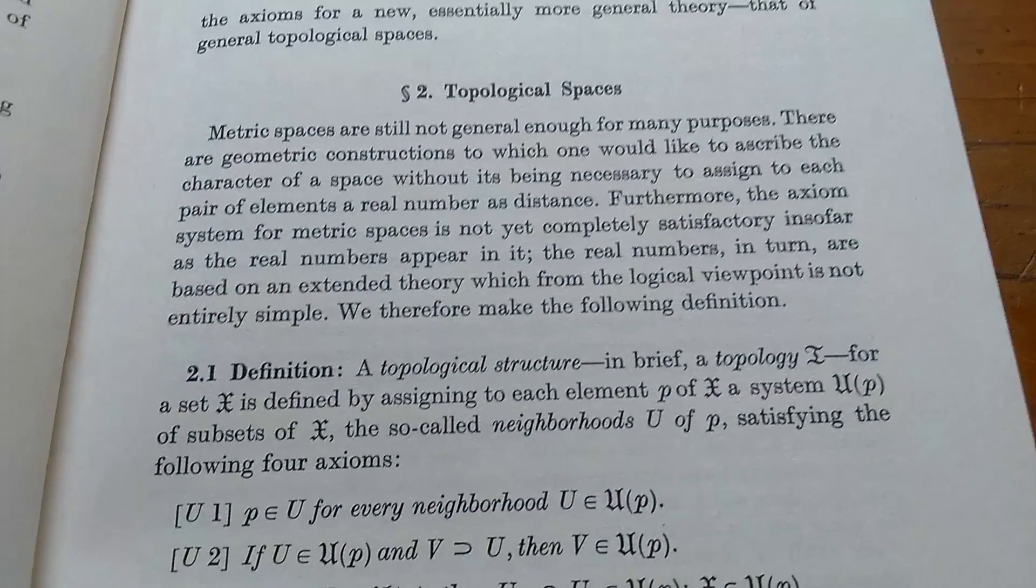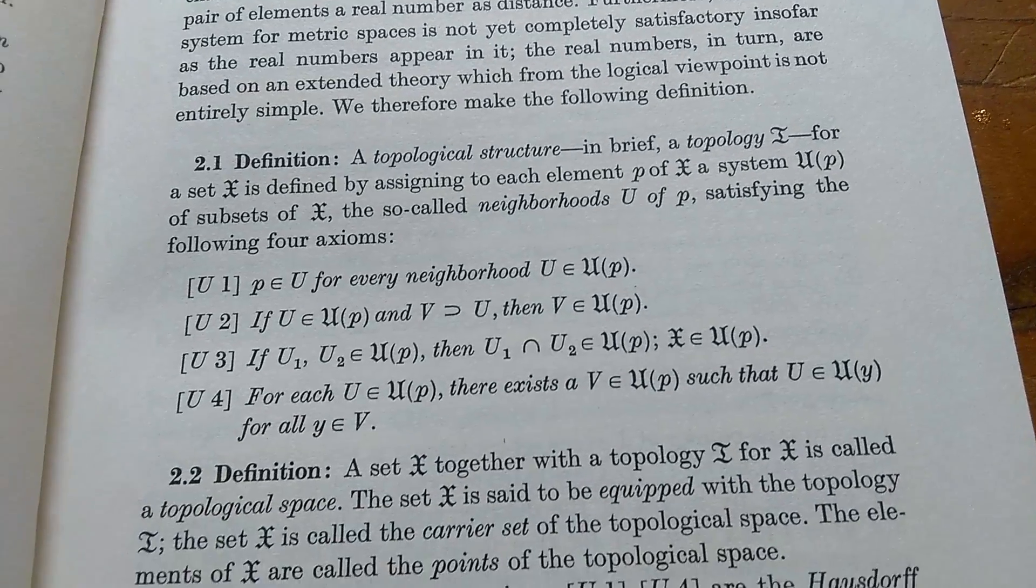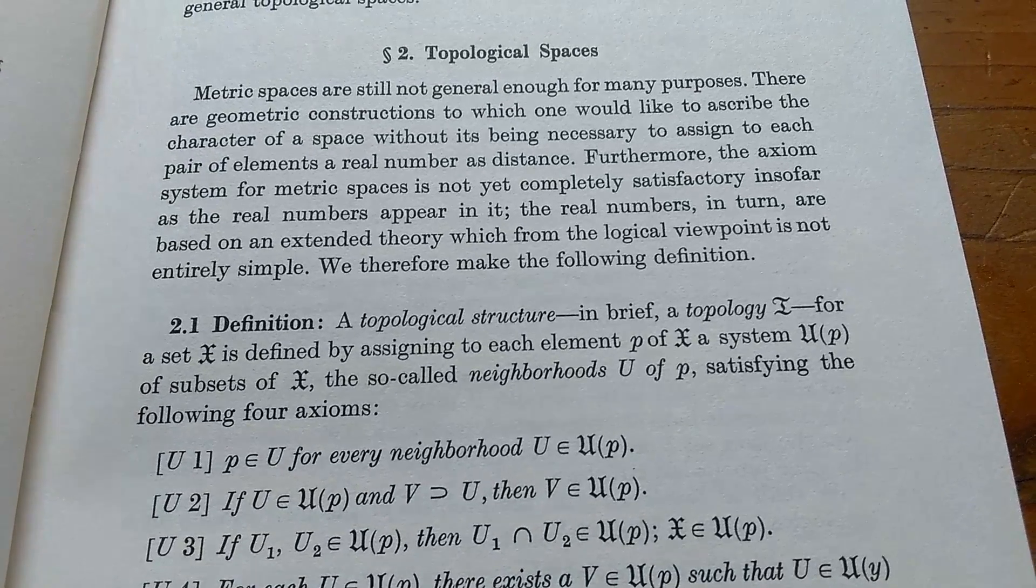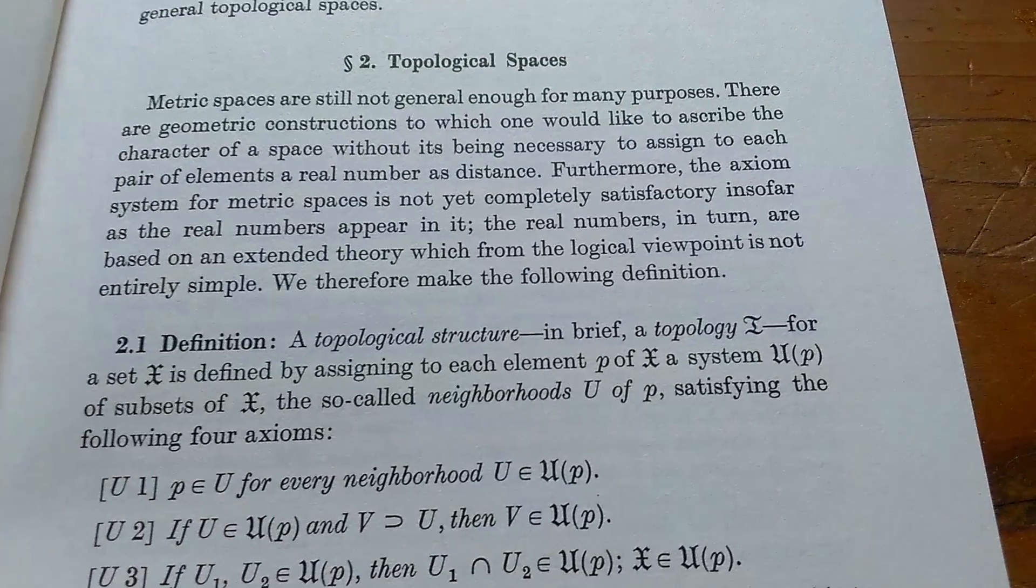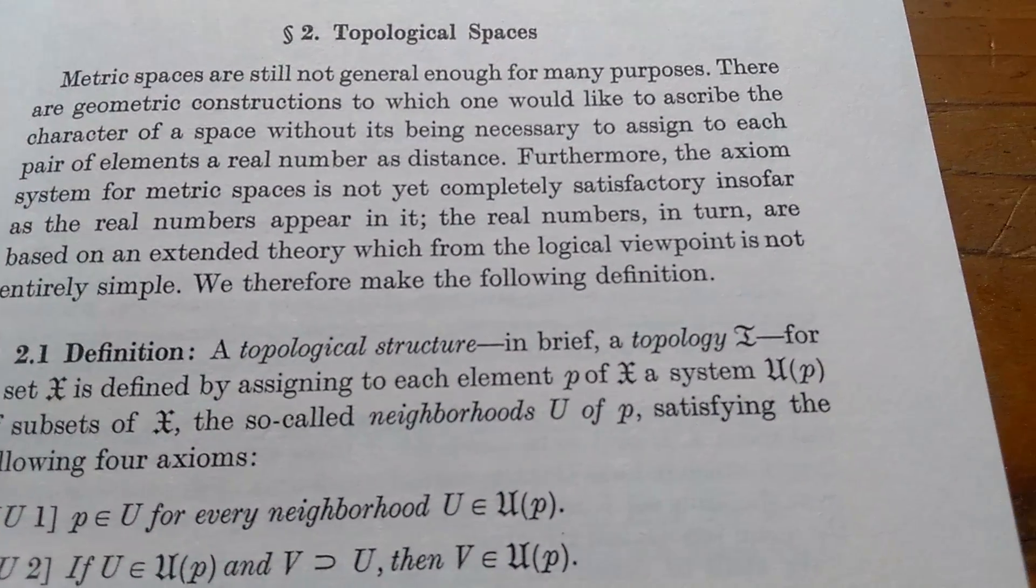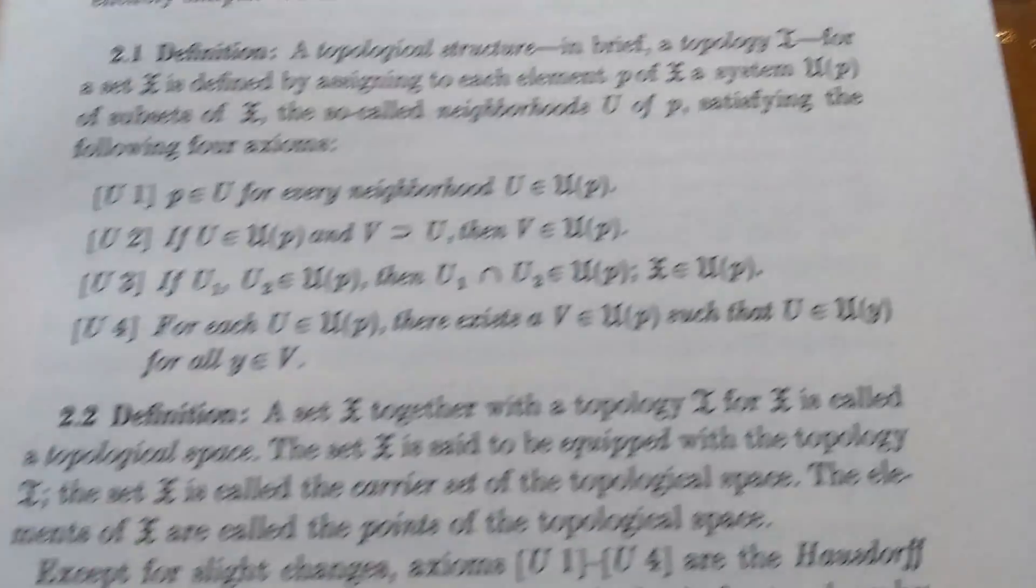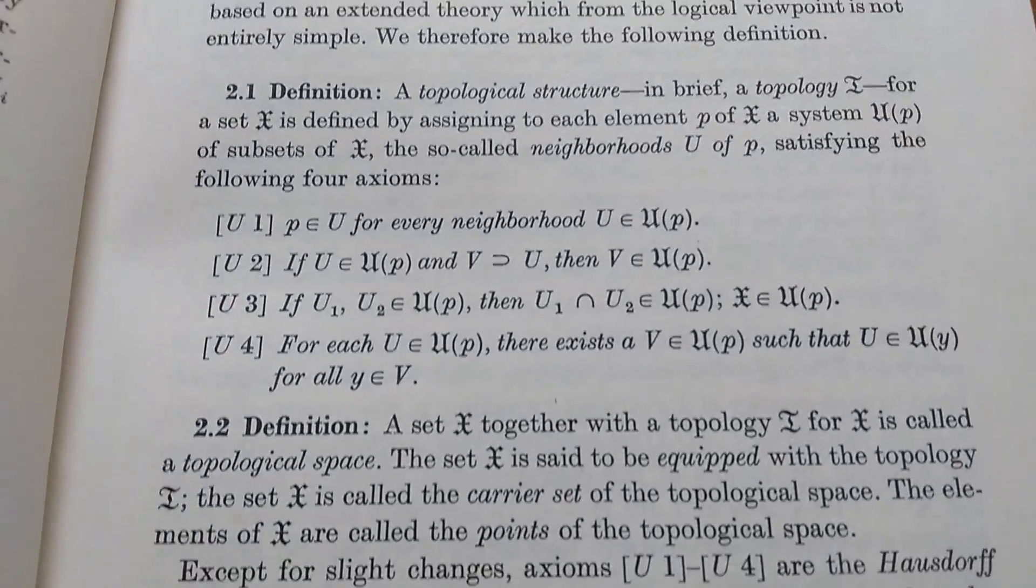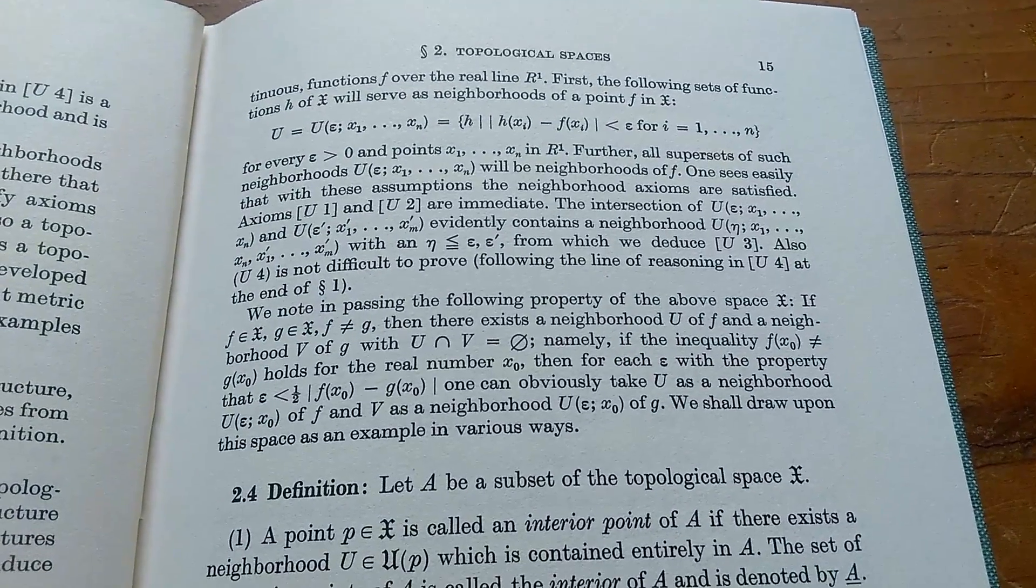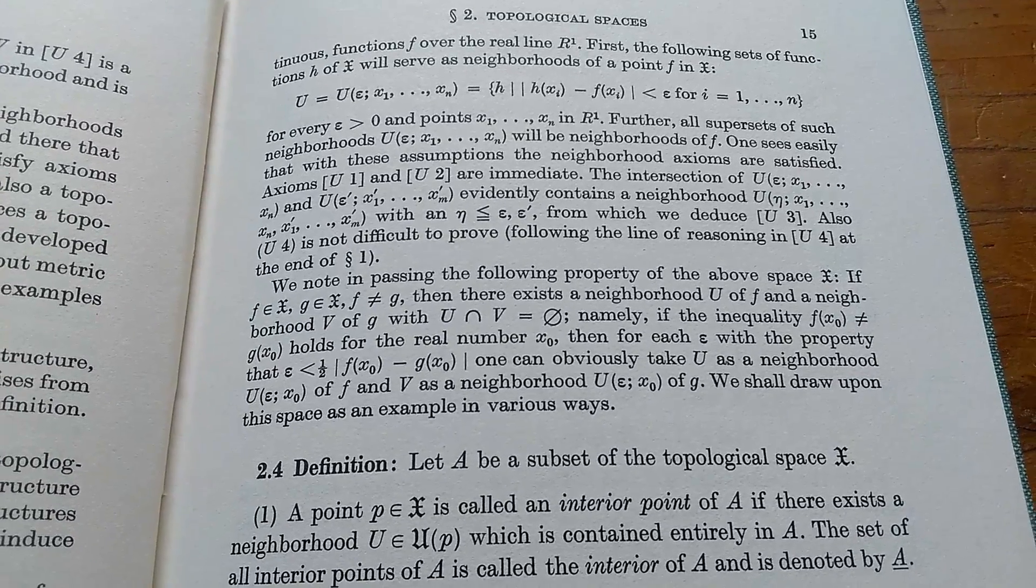So here he gets into topological spaces and gives the general definition of a topology. But the way he does it is in terms of neighborhoods. He says a topological structure, in brief, a topology, I'll just call that t or tau for a set x, is defined by assigning to each element p of x a system of subsets of x, the so-called neighborhoods u of p. So he's defining topology in terms of a neighborhood system, which is not always done. I think one of the main reasons for owning this book is that it gives you a different perspective on topology. It's written in a very different way than a lot of the newer books are written today.